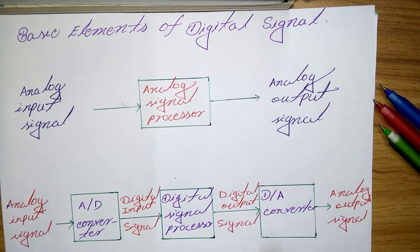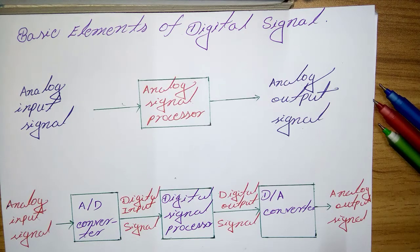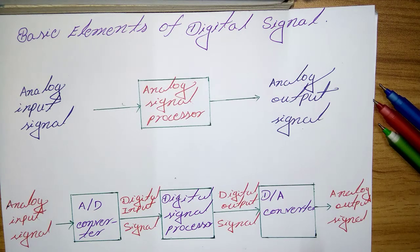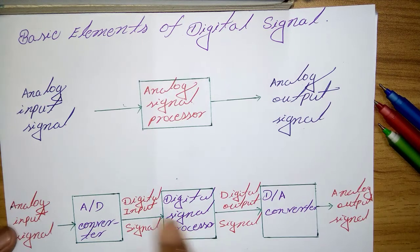However, there are other practical applications involving signal analysis where no Digital-to-Analog Converter is required. For example, in the digital processing of radar signals, the extracted information — such as the position of an aircraft and its speed — may simply be printed on paper, so no DAC is needed in that case.